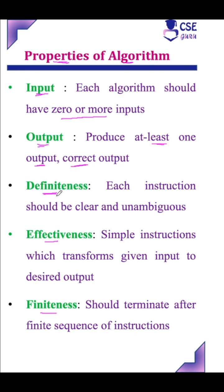Definiteness means the algorithm instructions should be clear and unambiguous. Effectiveness means the algorithm should consist of only simple instructions, and these instructions should be in a form that transforms the given input to the desired output.